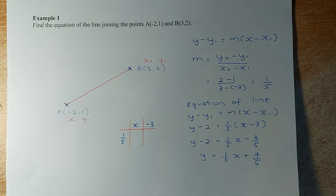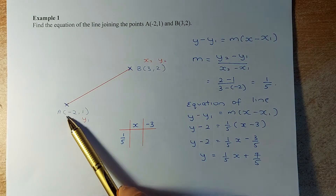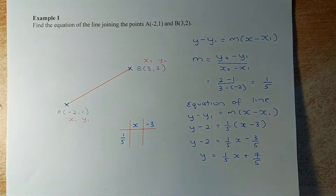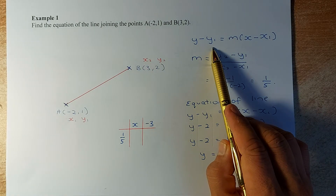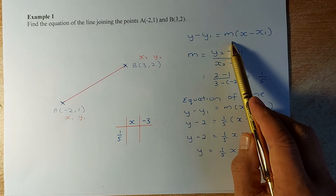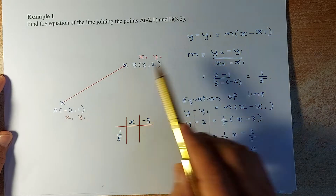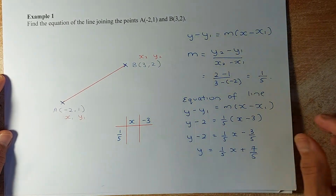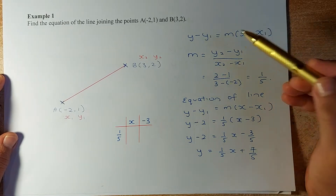You are going to find the equation of the line joining 2 points: A which is (-2, 1) and B at (3, 2). To find the equation of the line, the formula to remember is y minus y1 equals m times (x minus x1). Here, m is the gradient, y1 is the y-coordinate of point A or B, and x1 is the x-coordinate of point A or B. So before we do that, we need to find m.